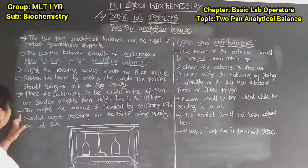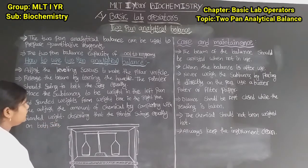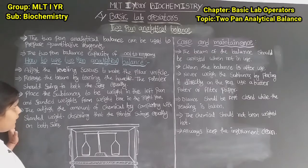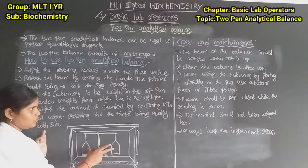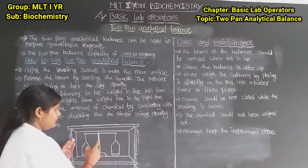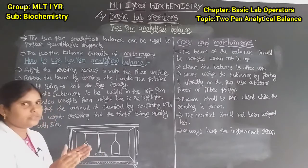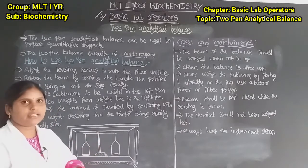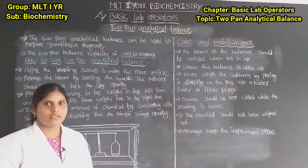Adjust the amount of chemical by comparing with the standard weight, observing that the pointer swings equally on both sides. We compare the chemical powders to the standard weights placed in the right pan. For example, if we want to weigh 10 grams of powder, we place a 10 gram weight in the right pan.